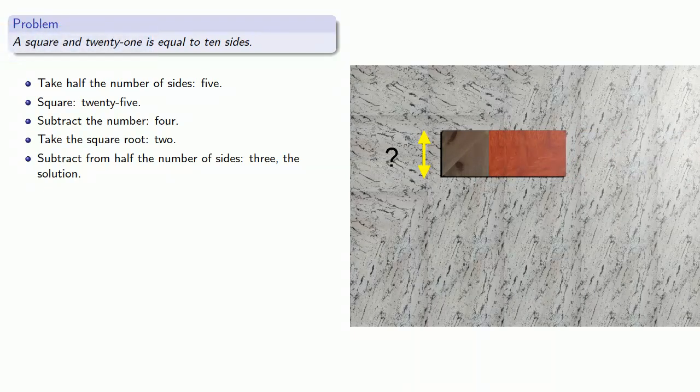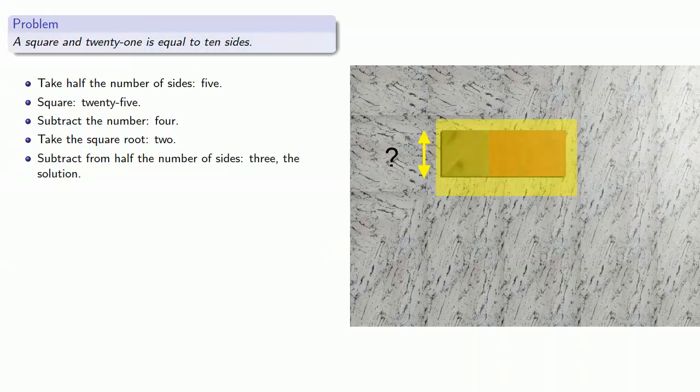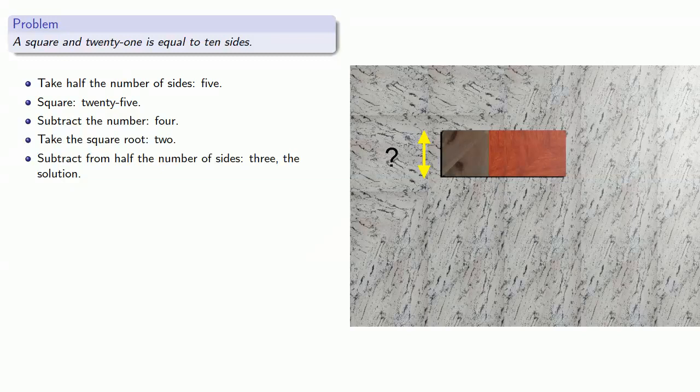So this is our square and 21, and it's supposed to equal 10 sides. In other words, the area of this figure is supposed to be equal to the area of a rectangle with width 10 and height equal to the side of the unknown square. But since this figure is the height of the unknown square, that means its top length here must be 10.